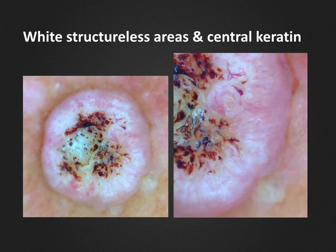The last white dermoscopic criterion, which can also be found in keratoacanthoma and squamous cell carcinoma, are the white structureless areas or zones. These are common in the raised parts of these tumors surrounding the central keratin mass. When we zoom in to take a closer look at these white structureless areas, you can see that there are multiple hairpin vessels in these areas. Besides this, we can also see the typical blood spots within the central keratin and even a few white circles. Thus, the diagnosis of keratoacanthoma or highly differentiated squamous cell carcinoma is clear-cut.